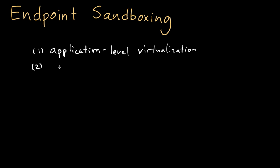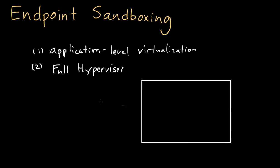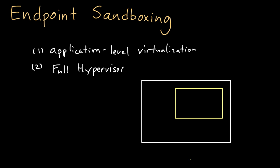The other approach is to do a full-on hypervisor. This is a much more heavyweight approach. What it involves is really creating a virtual machine instance. You've got your physical machine, and what you would want to do is create a virtual machine instance inside that physical machine. This would be a pretty extensive virtual machine instance — it would contain really everything you could possibly imagine that could cause the system to become compromised.